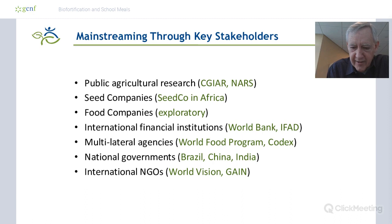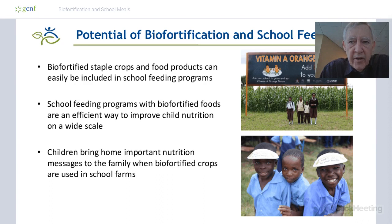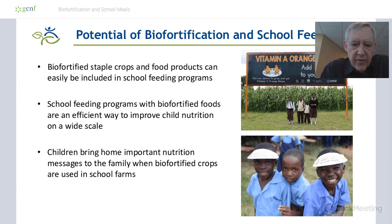Now let's talk a little about school feeding. What we tell organizations is that wherever you have a program with a staple food crop, all you have to do is substitute one-for-one the biofortified seed or biofortified food in place of the non-biofortified. You've automatically added a nutritional dimension to your program. For example, school feeding programs that were providing white maize as part of the school meal — we simply substitute the orange maize for that.